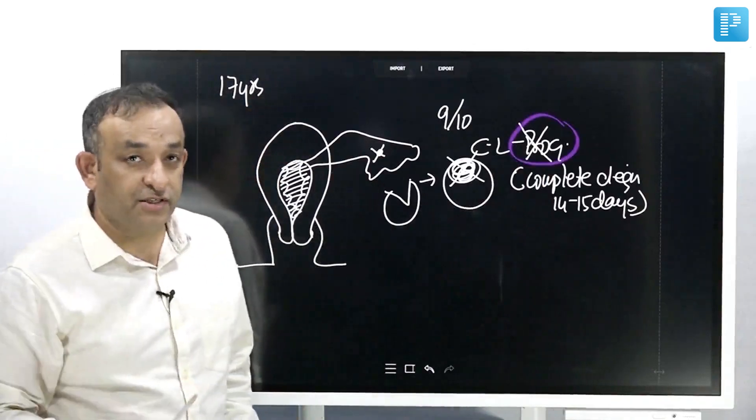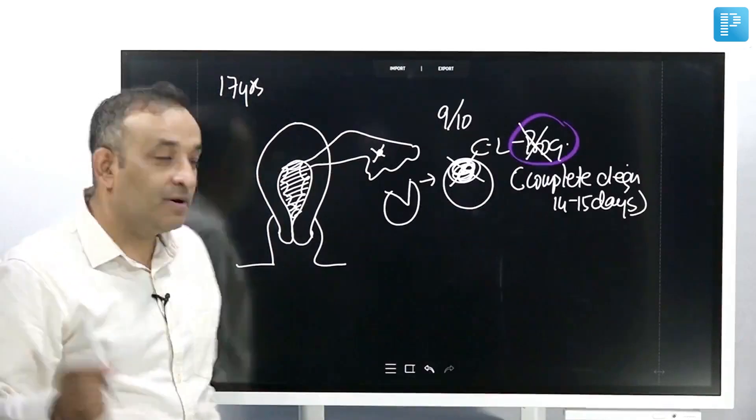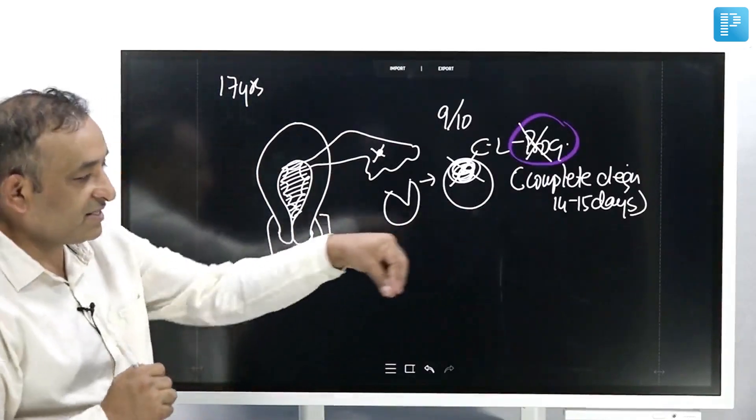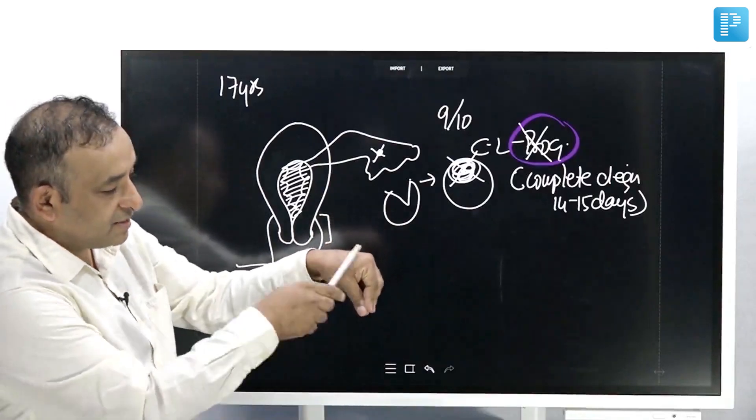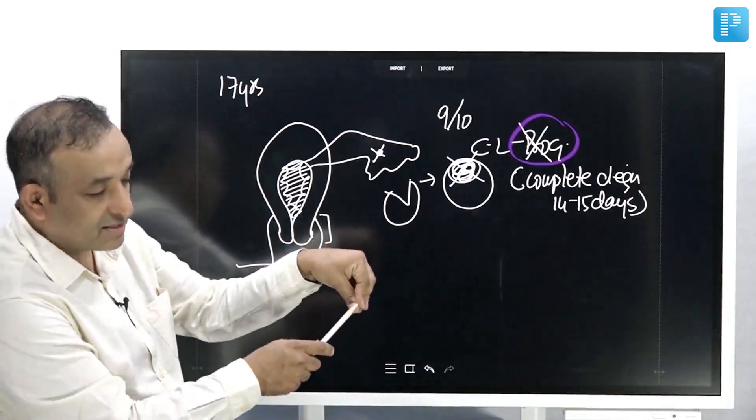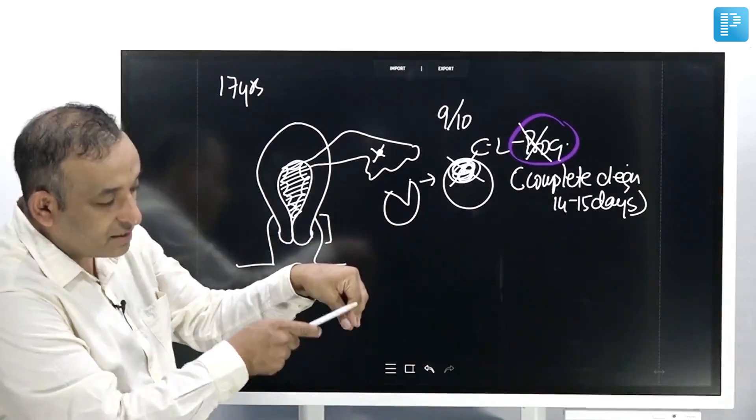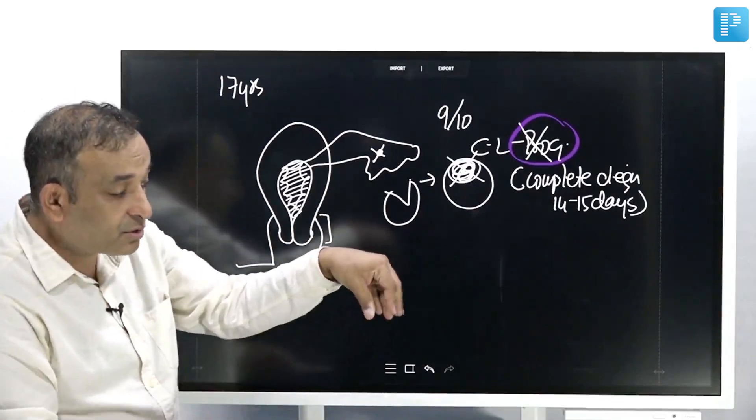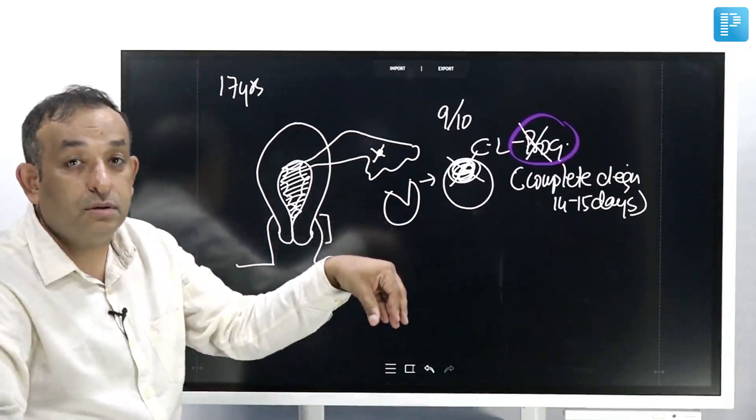I did not say expulsion, expulsion is a whole different ball game. Look at this length of the cervix. My hand is like a uterus now, there's a cavity and there's a cervix. Look at the length of the cervix especially in a young girl. This long cervix, you think it's going to just open up and allow the endometrium to walk out? No.